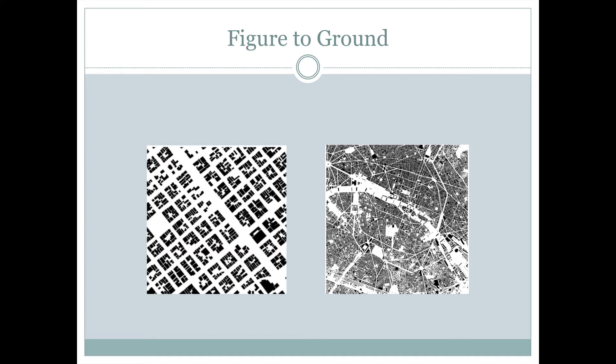And the one on the left also shows where the streets are, but because we're so zoomed in, we see the streets, we see the spaces between the buildings, which are shown in black, but it may not be as apparent that this is a map if someone were to just look at the figure to ground zoomed into this level here.